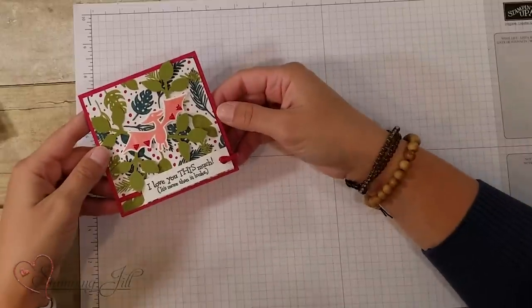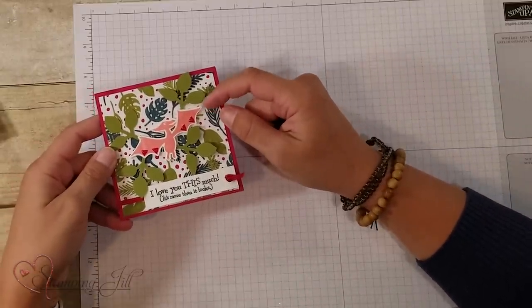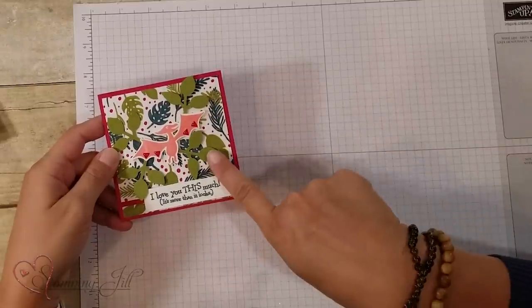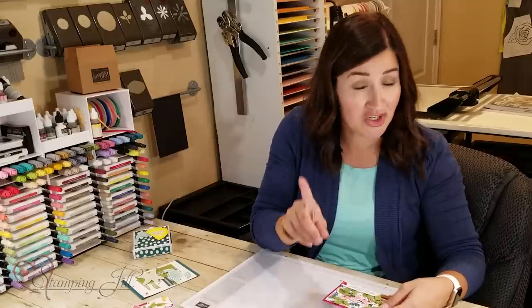I tried to keep this one pretty simple too. I stamped our little pterodactyl here in the Flirty Flamingo and then cut her out using the dies. I used the leaf punch, which coordinated really cute with this suite. And I used that saying again, but I'm going to show you some other cute things.